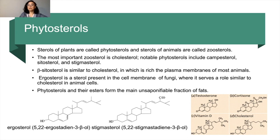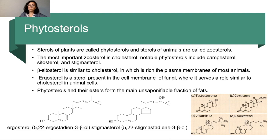Sterols of plants are called phytosterols and sterols of animals are called zoosterols. The most important zoosterol is cholesterol. Notable phytosterols include campesterol, sitosterol, and stigmasterol. Sitosterol is similar to cholesterol and is found in the plasma membranes of most plants. Ergosterol is a sterol present in the cell membrane of fungi, where it serves a role similar to cholesterol in animal cells. Phytosterols and their esters form the main unsaponifiable fraction of fats. The structures of some of the most important sterols can be used in medicine.